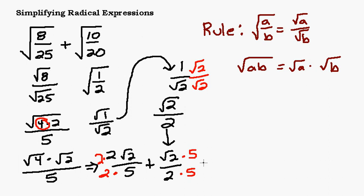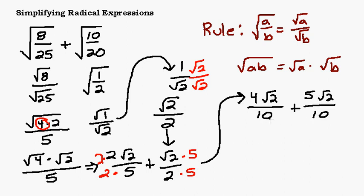So now 2 times 2 is 4√2 over 2 times 5 is 10, plus √2 times 5 is just 5√2, and 2 times 5 is 10. Now I have this common denominator, so I can add my fractions together. The denominator will be 10 and the numerator will be 4√2 plus 5√2.